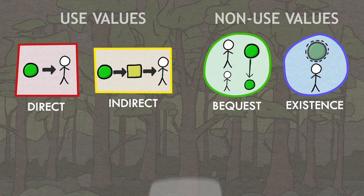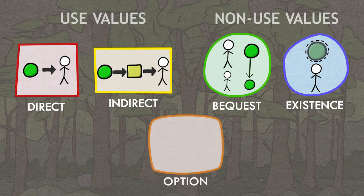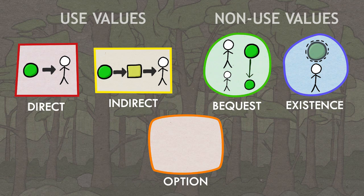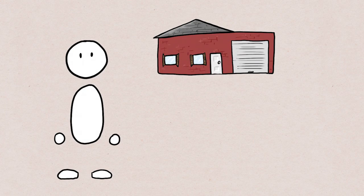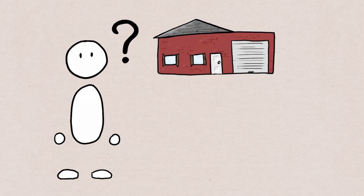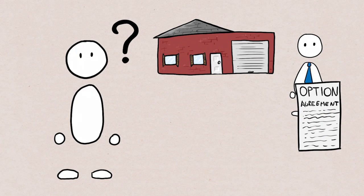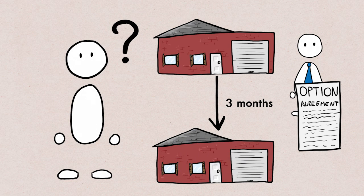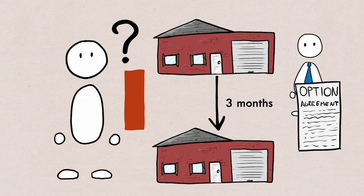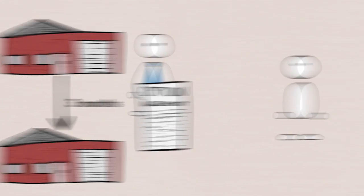Lastly, somewhere slightly between the world of use and non-use values, there are option values. Option values exist in some markets. For example, let's say you're offered this house at a specific price. You may not know if you want it or not for whatever reason, but it's a limited time offer. So you enter into an agreement with the owner that gives you the right to buy it in say 3 months if you want. They're not going to sell it to anyone else, but you're going to have to pay for the privilege. Whether or not you actually end up buying the house, you are willing to pay for this option. It's the value in having the option of using something in the future.